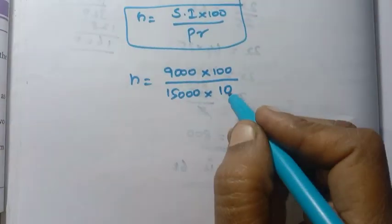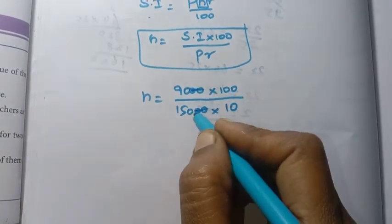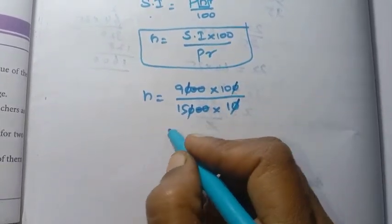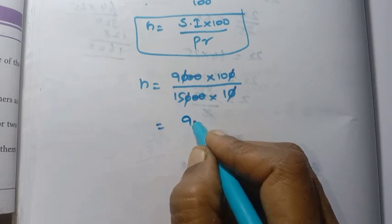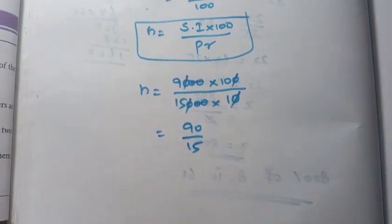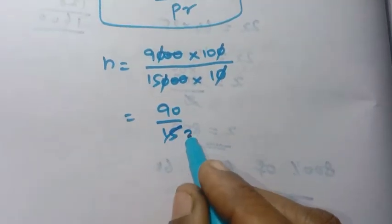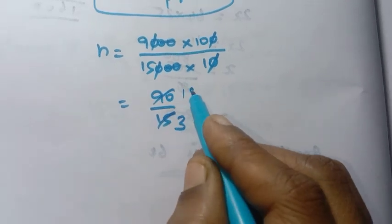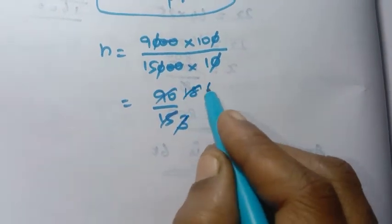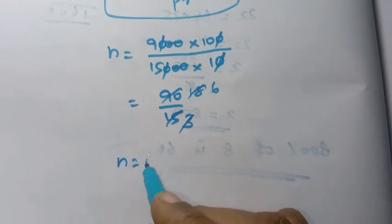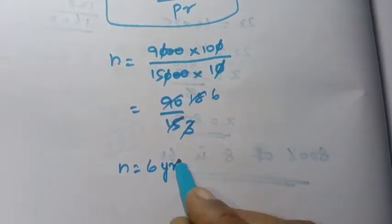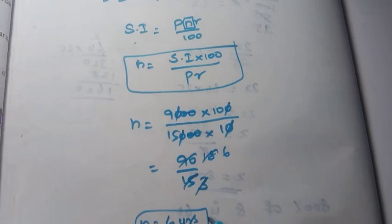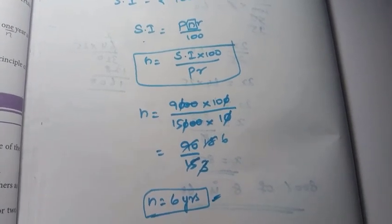Cancelling zeros: 9,000 × 100 / (15,000 × 10) simplifies to 90/15, which equals 6. Therefore N = 6 years.